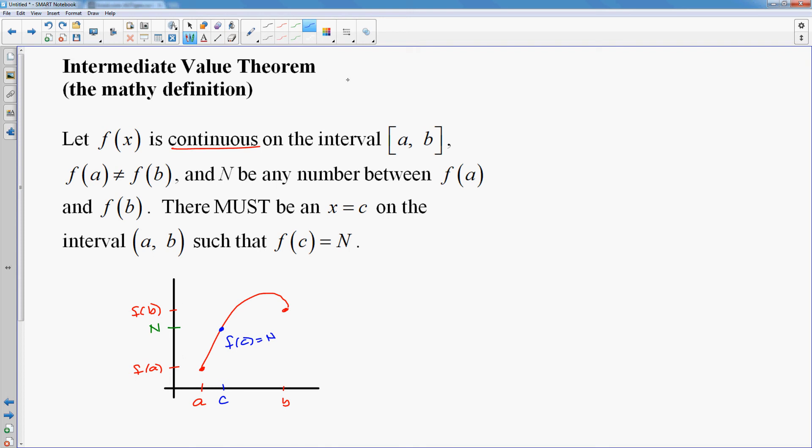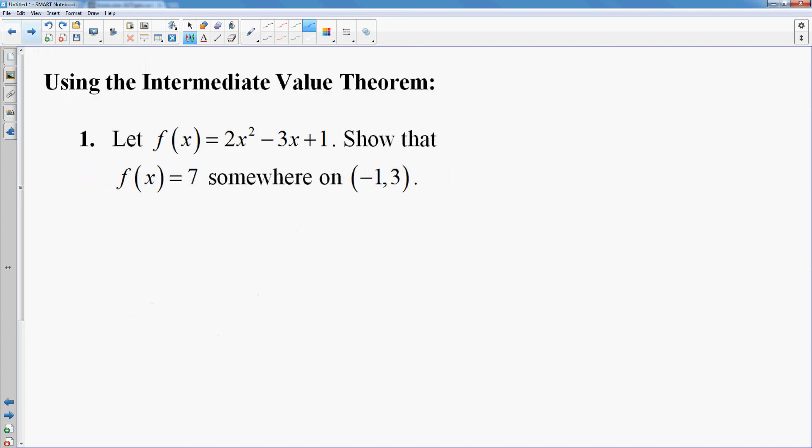It's kind of silly, but that's what it says. It's usually used to show that a function actually has roots. So let's do three quick examples of using the intermediate value theorem. Let's let this be my function, 2x squared minus 3x plus 1, and show that f of x must equal 7 somewhere on the interval negative 1 to 3.